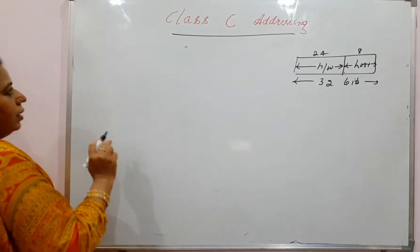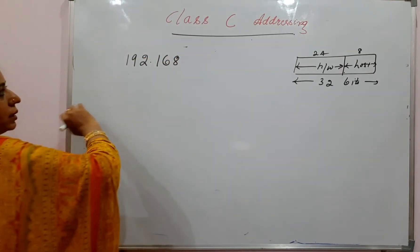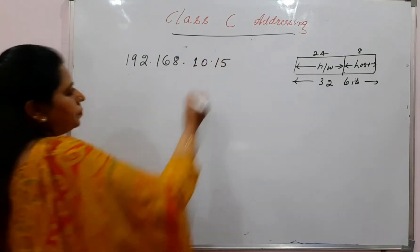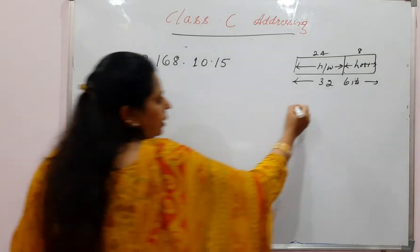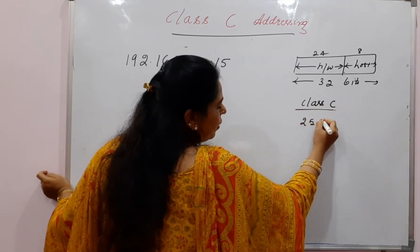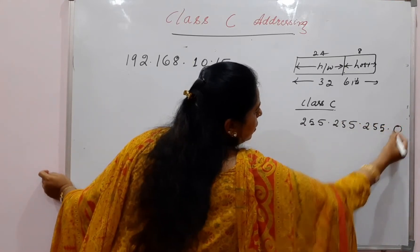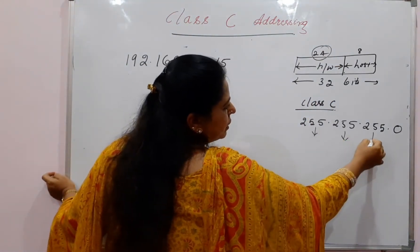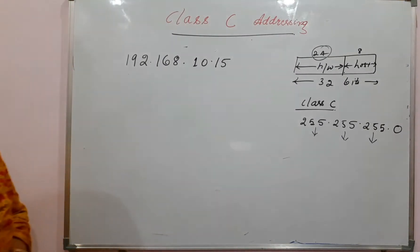Let's take one example. I will randomly take a Class C address: 192.168.10.15. Given this IP address, what you are going to do first is remember that in Class C addressing the default subnet mask value is 255.255.255.0. That is 24 bits — 8 bits, 8 bits, and 8 bits — used to represent the network.